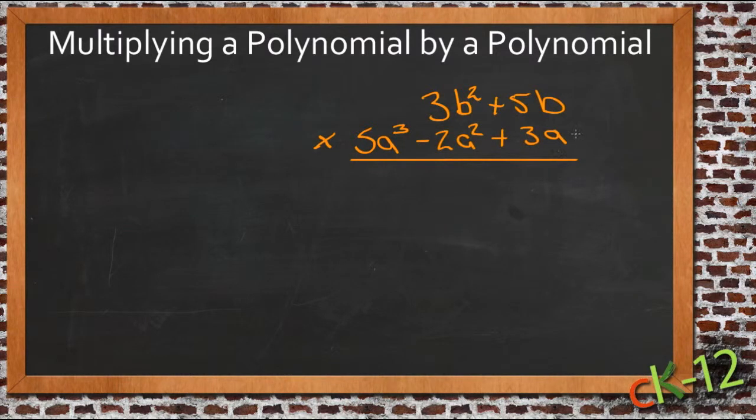We have 3a times 5b first. So we have 3 times 5 is 15, and a times b is ab. So we're going to have a positive 15ab. And then we have that same 3a, and we're going to multiply it by 3b squared. So now we have 3 times 3 is 9, and a times b squared is ab squared. So we have 9ab squared.